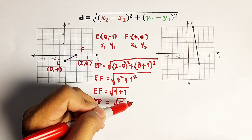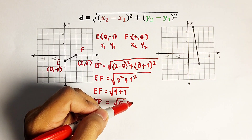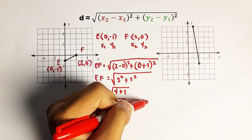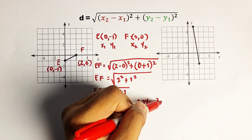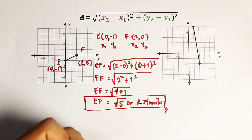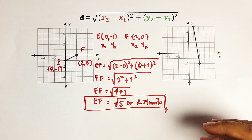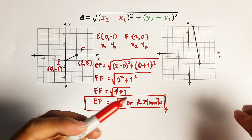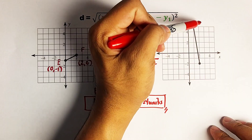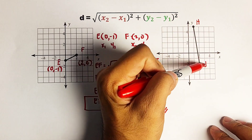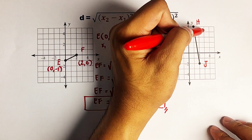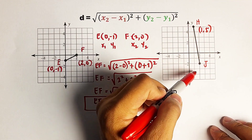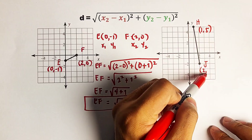But again, if your teacher asks you to give the answer in decimal form, that would be roughly 2.24 units. Now it's your turn to find the distance between these two points. Let's say this is point H and point J. The coordinates of point H are 1 comma 5, and the coordinates of point J are 2 comma negative 2.